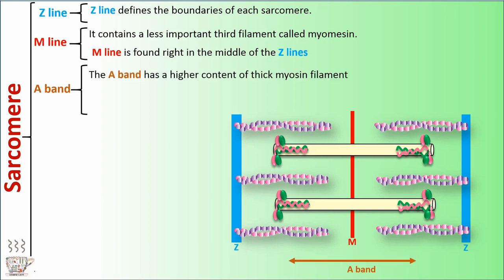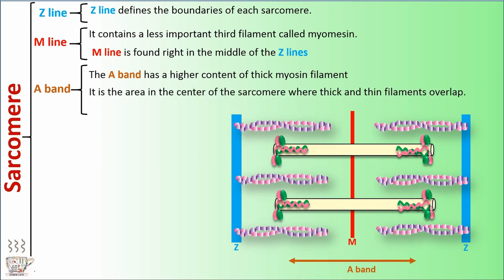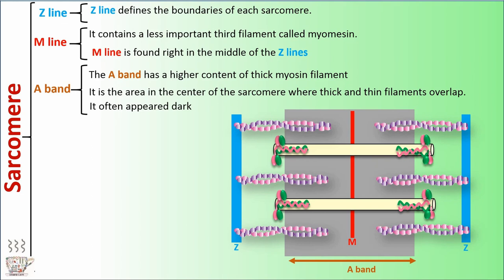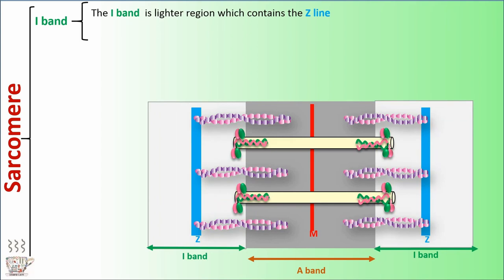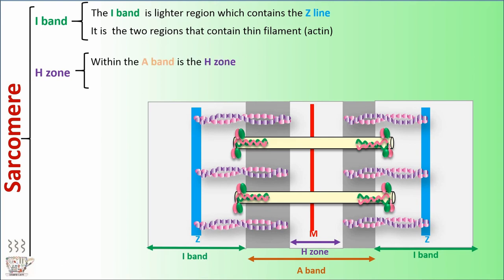The A band has a higher content of thick myosin filaments. It's the area in the center of the sarcomere where thick and thin filaments overlap, and it often appears dark. The I band is a lighter region which contains the Z line — it's the two regions that contain thin filament or actin. Within the A band is the H zone, which is the area composed only of the thick filaments or myosin.